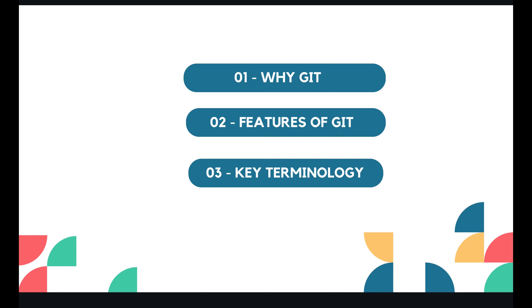Let me explain Git and GitHub like explaining to a child. Imagine you are working on a big drawing with your friends. Git is like a magic book where you keep track of all the changes you make to your drawing — each time you add something new or fix a mistake, you write it down. GitHub is like a special library where you keep your magic book along with your friends' books, so you can share drawings and see each other's changes.